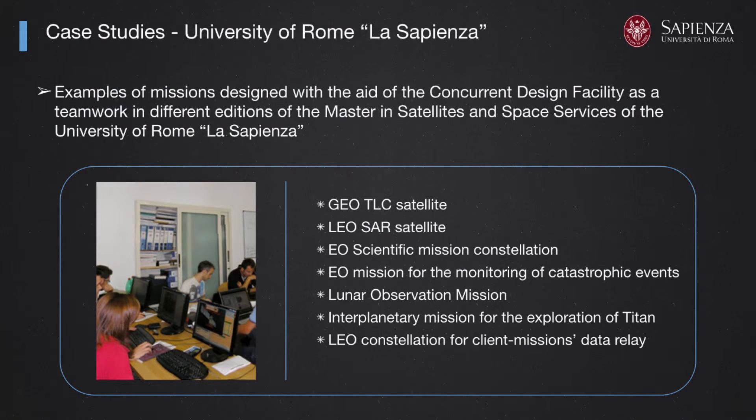These are examples of how a concurrent design facility — even one at the educational level like we have at La Sapienza — can work to provide a sound and well-organized design for developing an entire space system. Concurrent engineering helps a great deal in making well-directed design choices, reducing the time of design development, and reducing the risk of early-stage decisions that are not aligned with cost analysis.